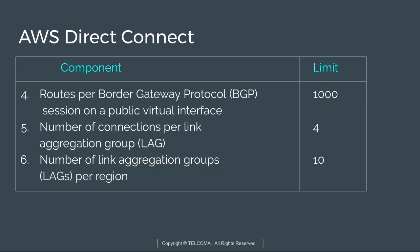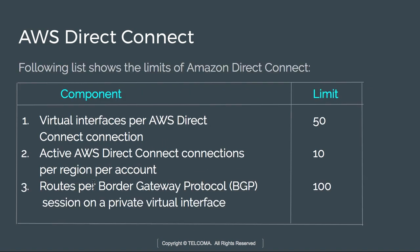Some of these limits can be increased on request. These include: active AWS Direct Connect connections per region per account, number of link aggregation groups per region, and number of connections per LAG. The remaining limits — such as routes per BGP session, routes per BGP session on a private virtual interface, and virtual interfaces per connection — cannot be increased on request.